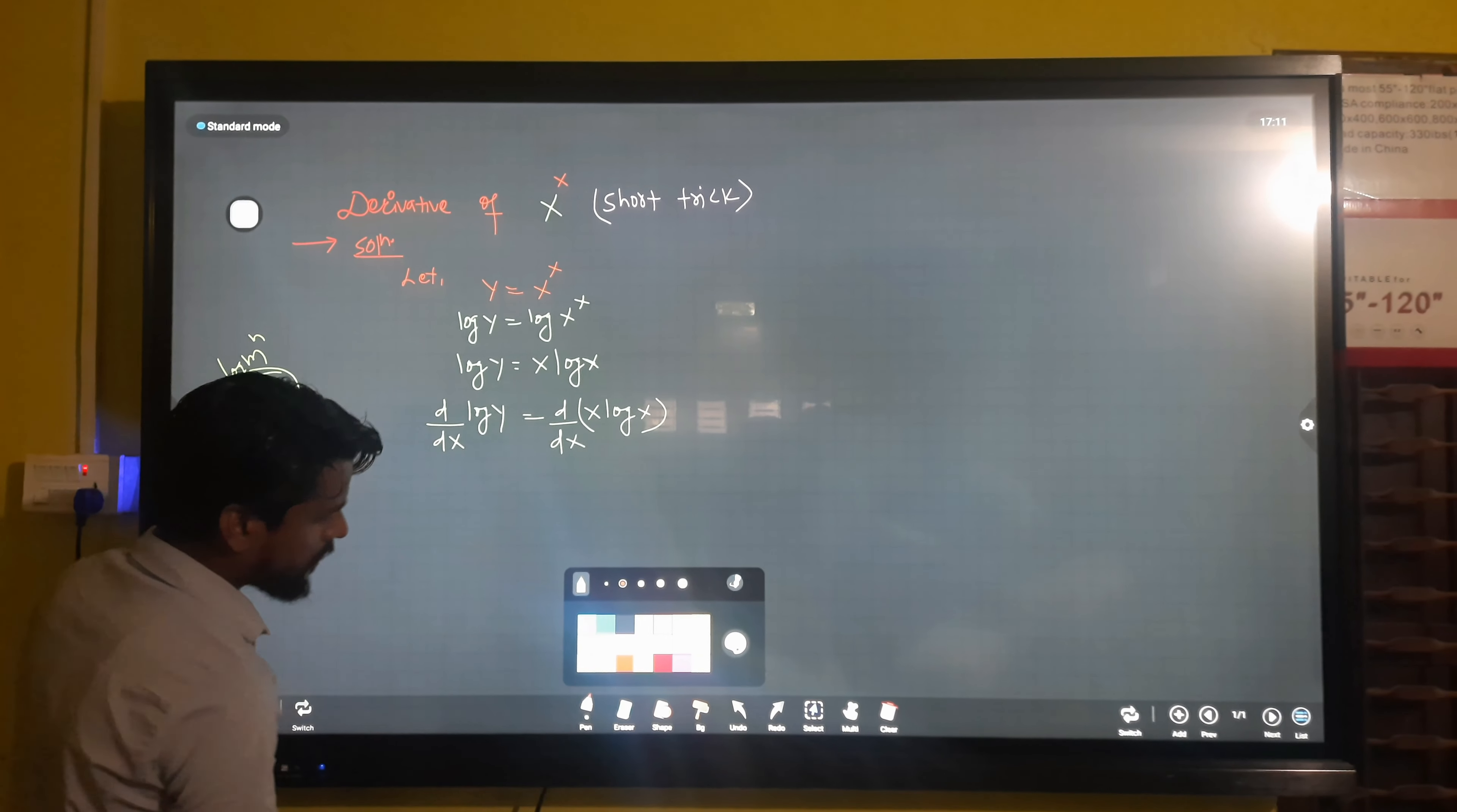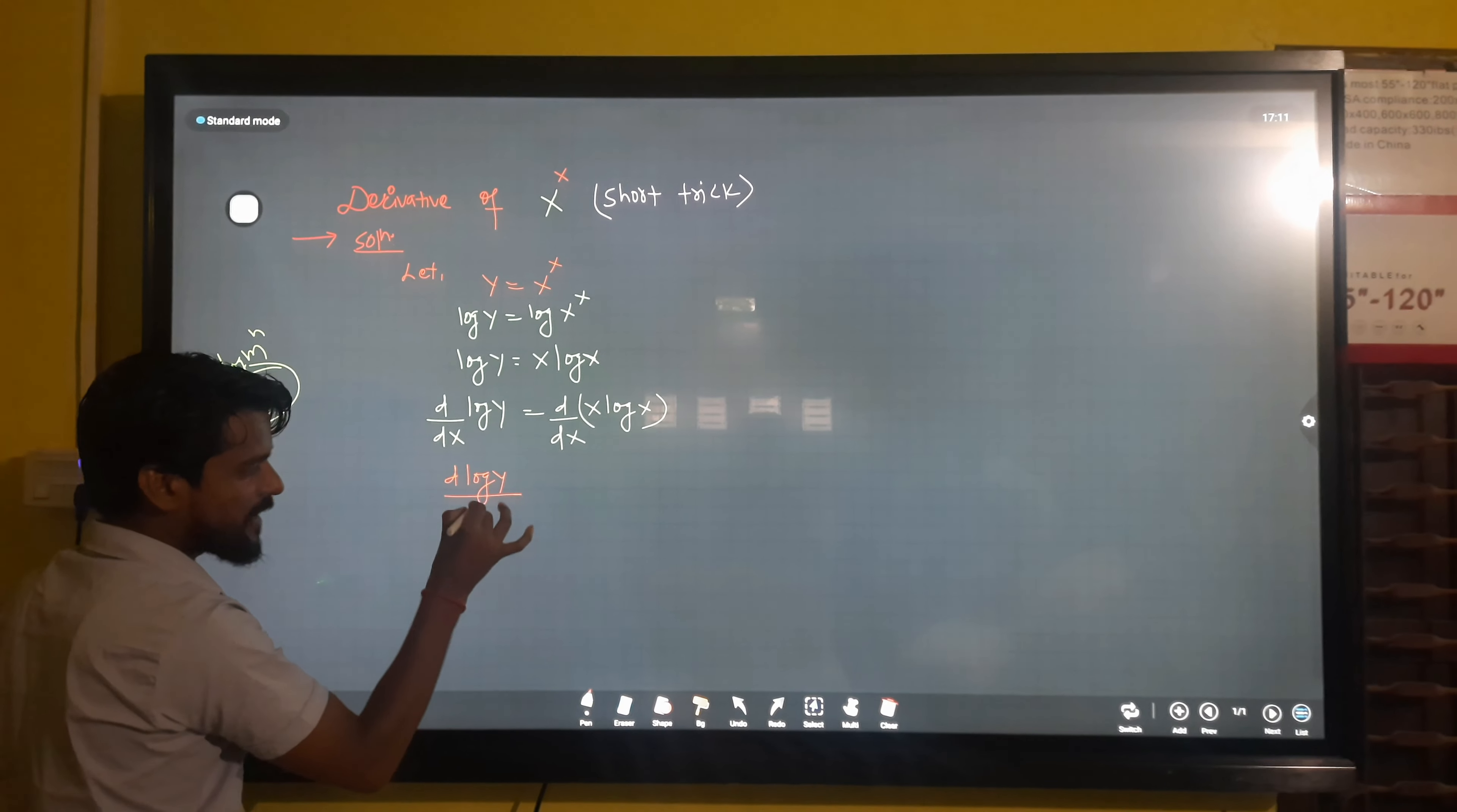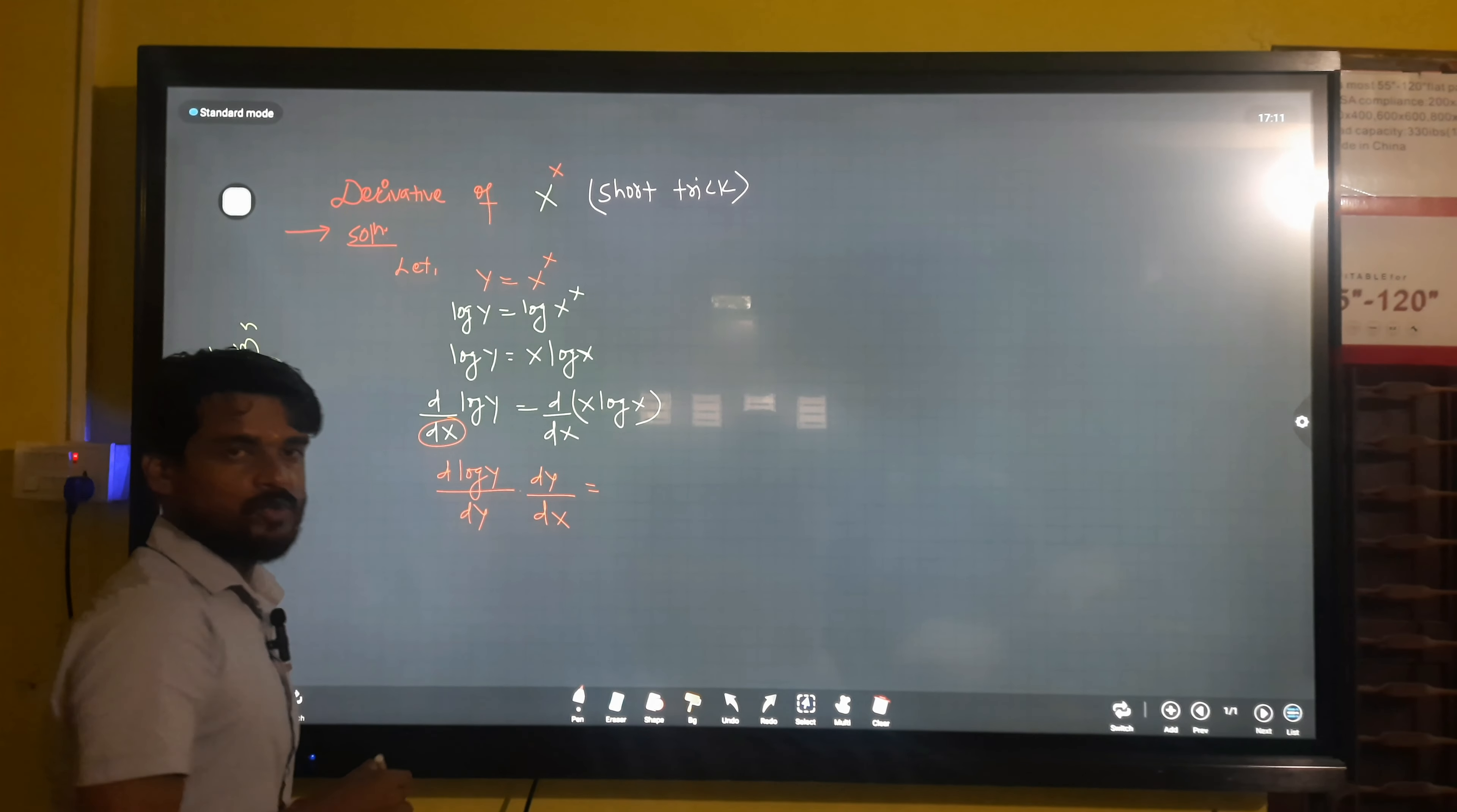The derivative of log y: since this is a function with respect to y, we use the chain rule. One by y times dy by dx. On the right side, we have two functions: x and log x. That's why we use the product rule.